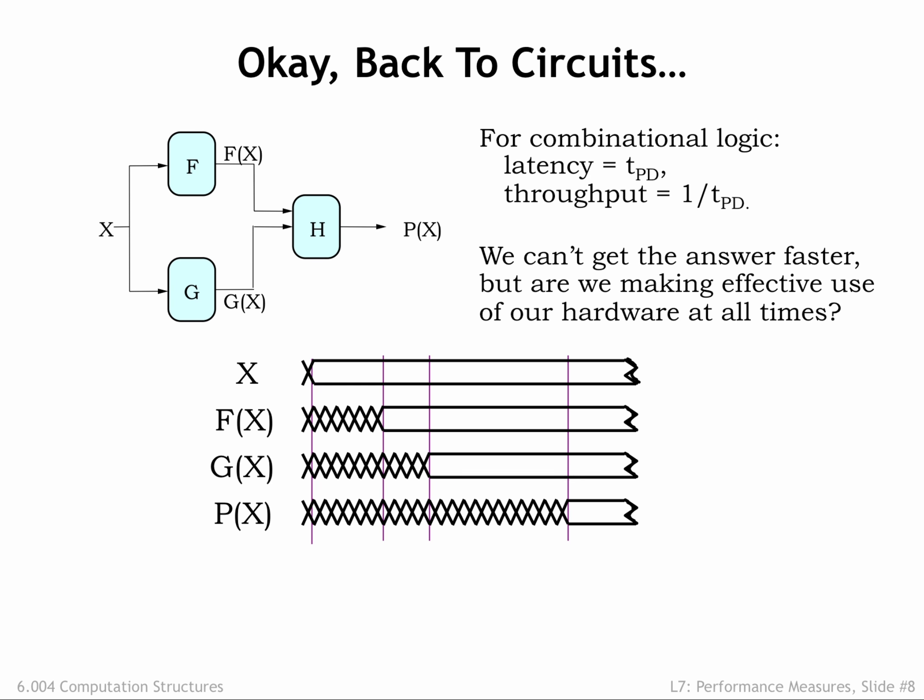Now that the inputs to H are valid and stable, the H module will produce the system output P(X) after a delay set by the propagation delay of H. The total elapsed time from valid input to valid output is determined by the propagation delay of the component modules. Assuming we use those modules as is, we can't make any improvements on this latency. But what about the system's throughput?